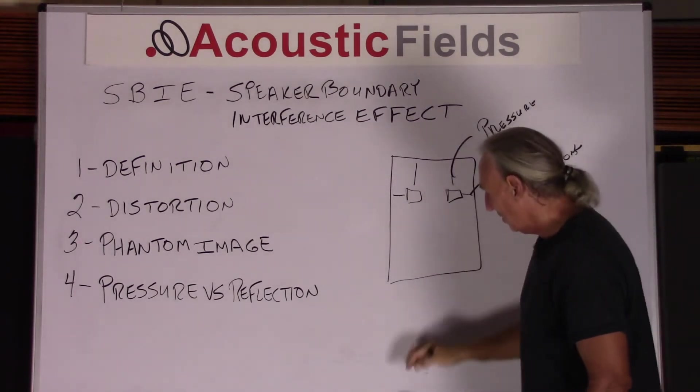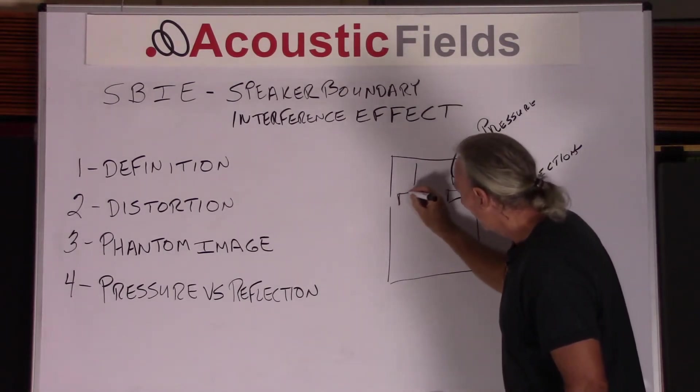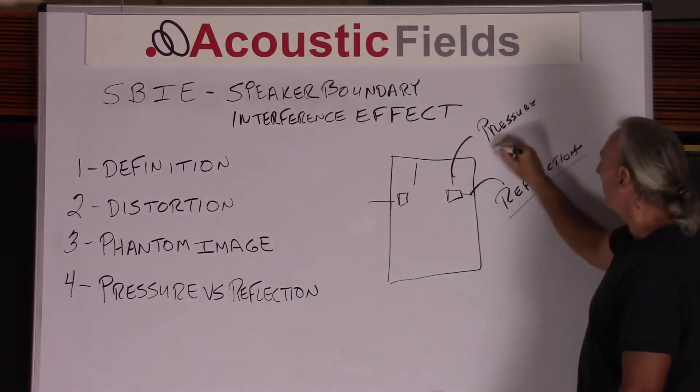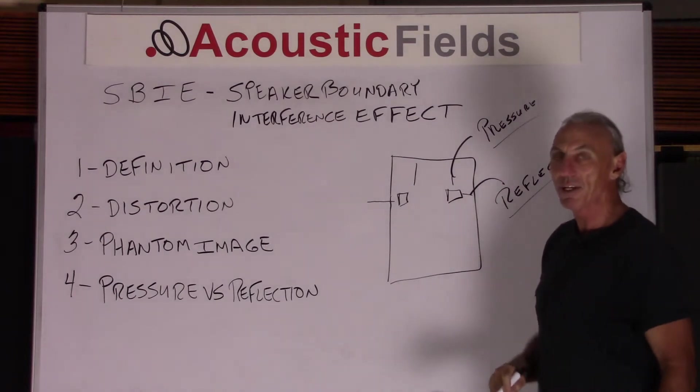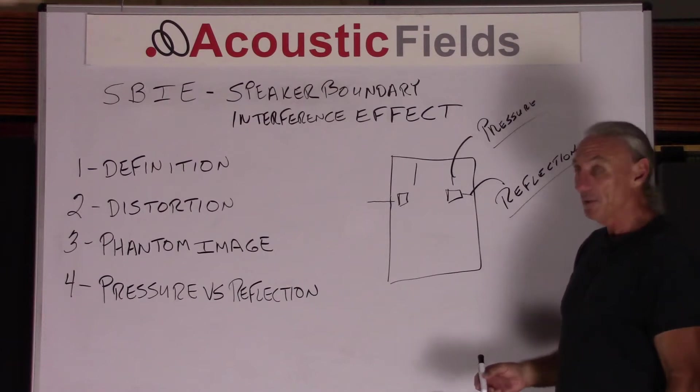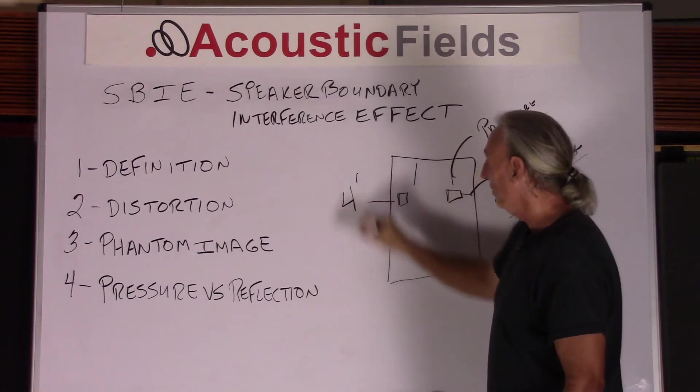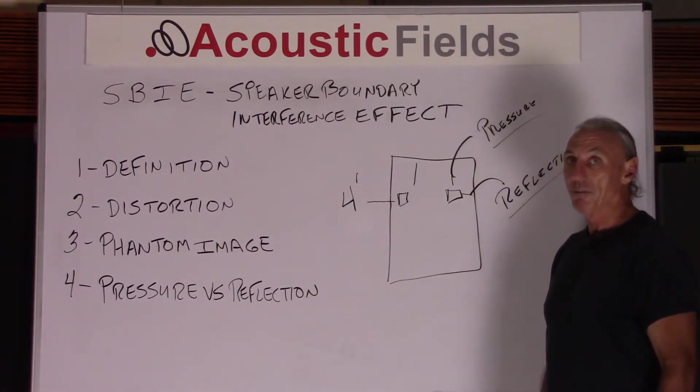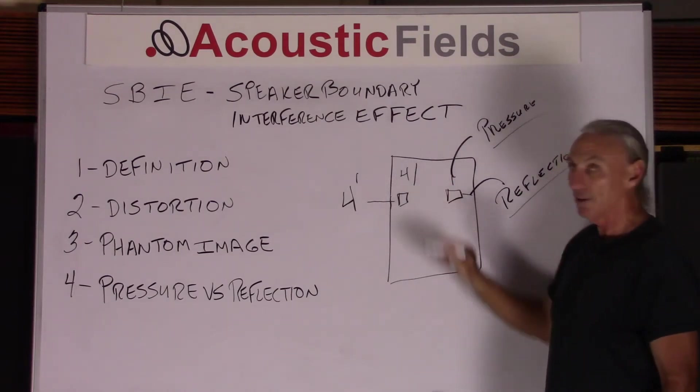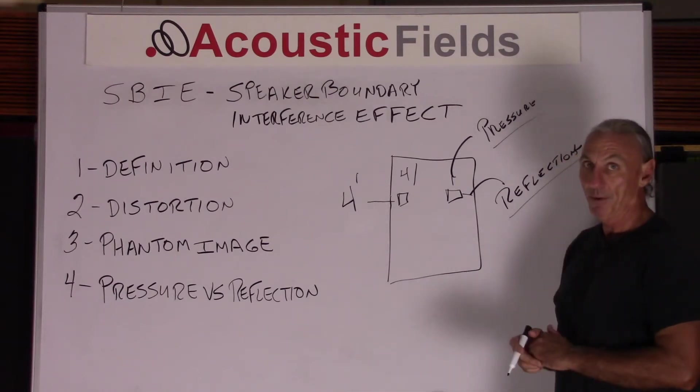As we move our speakers closer to the wall, what do we have? We shorten this distance, so we increase both of these issues exponentially and we just simply can't do that. People say, well, what's the minimum distance between the sidewalls? And I'm going to tell you right now, the minimum distance is four feet. Let's use that as our benchmark. Let's not have speakers any closer to the wall, any closer than four feet here to the front wall and any closer than four feet to the sidewall. What happens when it gets closer?